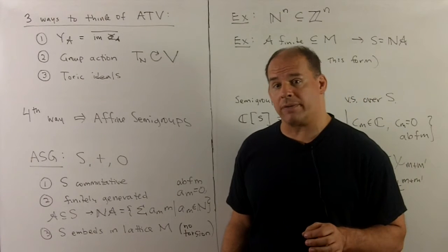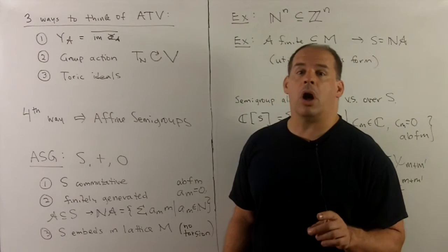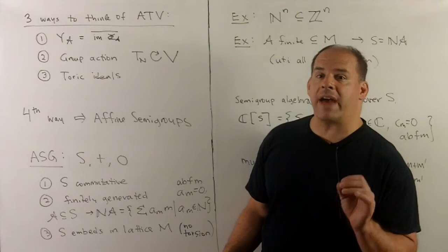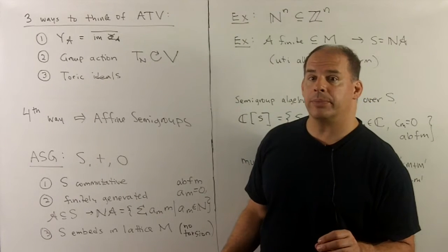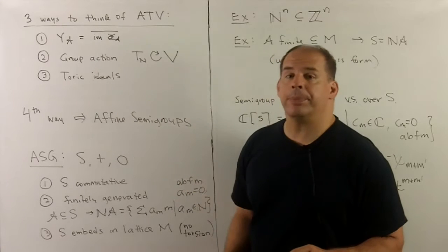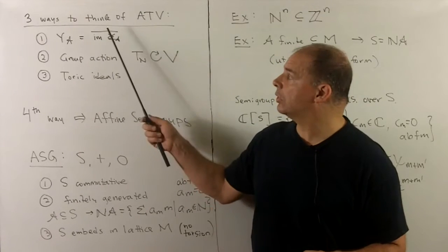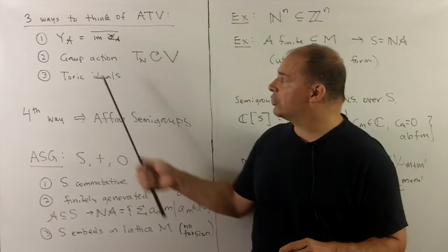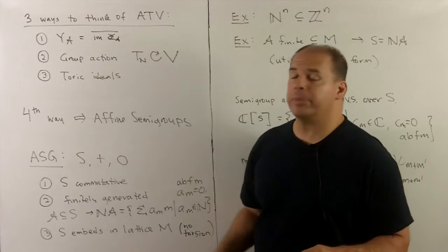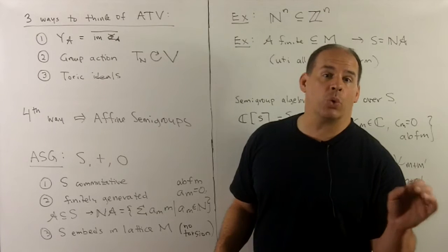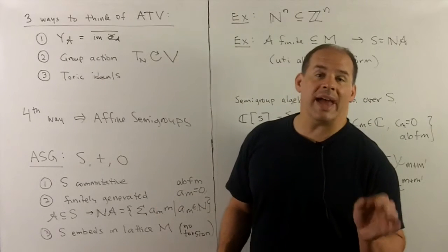Let's get back to affine toric varieties. Recall, we have three ways to think of affine toric varieties. First, the space is Y sub A, we have Zariski closure in the image of the map Phi sub A. We have definition in terms of group actions. Finally, we have the notion of toric ideals.